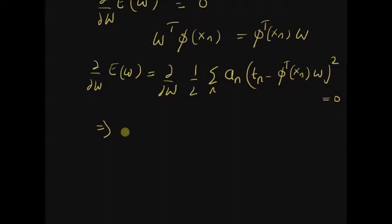This implies that the derivative of 1/2 and the a_n is independent of w. So we have the derivative of the square which is 2 times (t_n minus phi transpose (x_n) w) and this should be equal to 0.